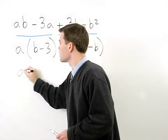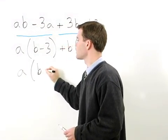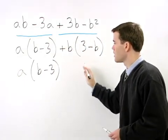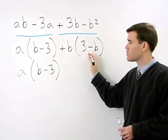When we do that, we still have A times B minus 3 over here, but if we factor out a negative 1 from 3 minus B,